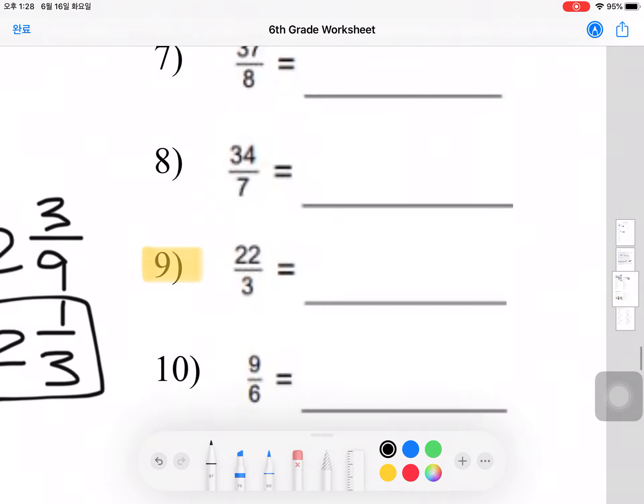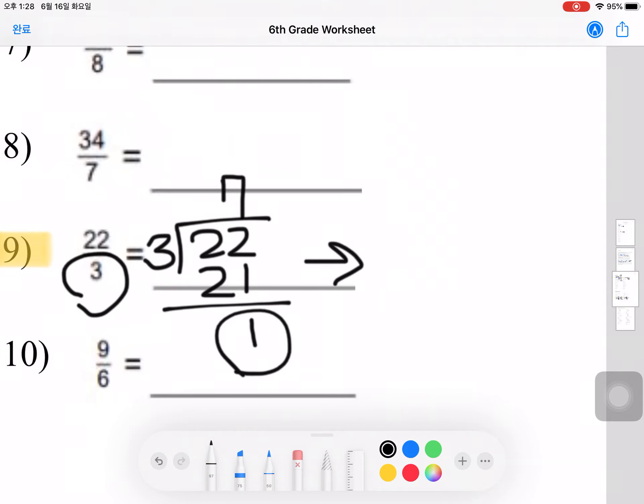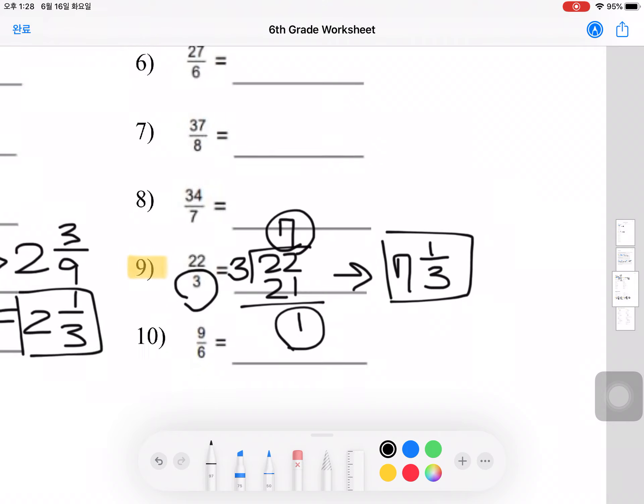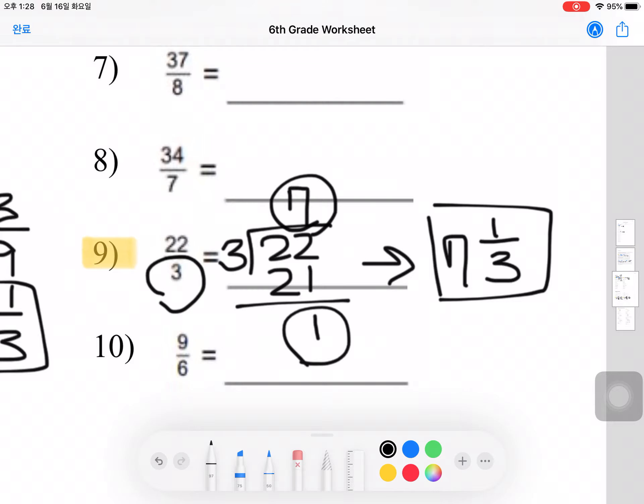Let's try number 9. 22 divided by 3. It goes in 7 times. 7 times 3 is 21. 22 minus 21 is 1, so 1 remainder. And 3 was in the original denominator. So your answer would be 7 and 1/3. That's your final answer. And like the previous problem, we don't need to simplify, so we could just leave it like this.